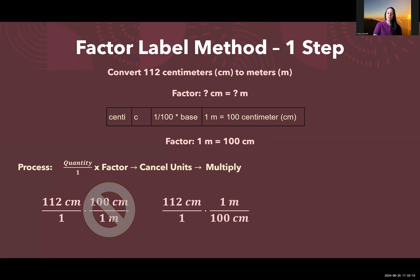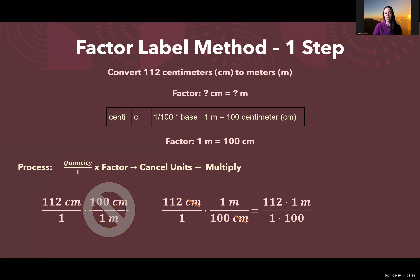The correct setup is 112 centimeters over 1 times the factor of 1 meter over 100 centimeters. Having the top-bottom pair of centimeters lets us cancel, leaving only meters. Multiplying straight across gives us 112 times 1 meter over 1 times 100, which is 112 meters over 100. Dividing gives us 1.12 meters.